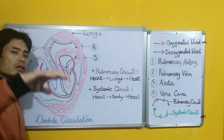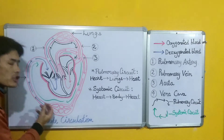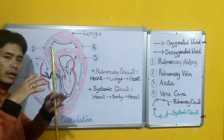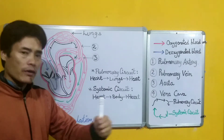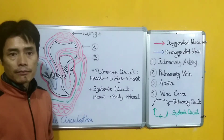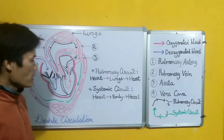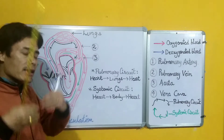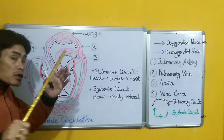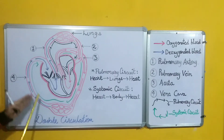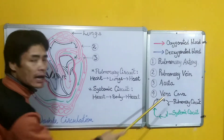When the blood goes to the different parts of the body, it needs to be recirculated back to the heart. At the tissue level, exchange of gases takes place — the different organ systems take away oxygen and pour carbon dioxide into the circulating blood. This blood, now laden with carbon dioxide, is taken back to the heart by the vena cava.